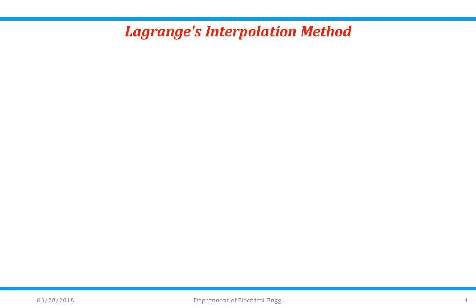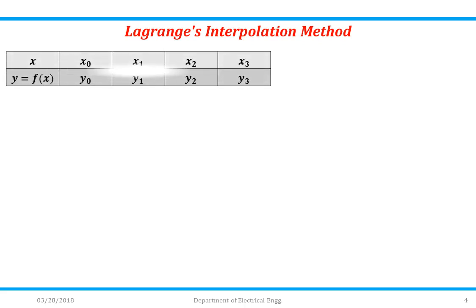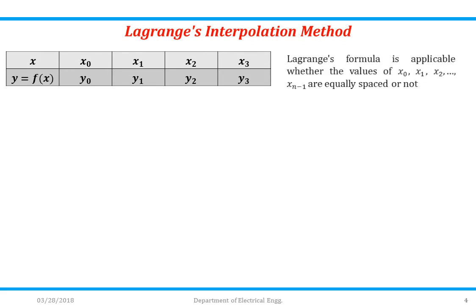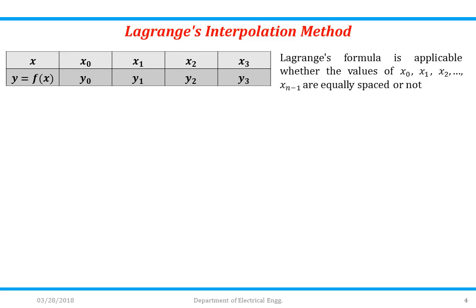Let us consider the formula for Lagrange's interpolation method. If the data is given as x0, y0, x1, y1, x2, y2 and x3, y3 — this method is used when data is unequally spaced. If the distance between x1 and x0, x2 and x1, x3 and x2 is the same, then it is equally spaced.